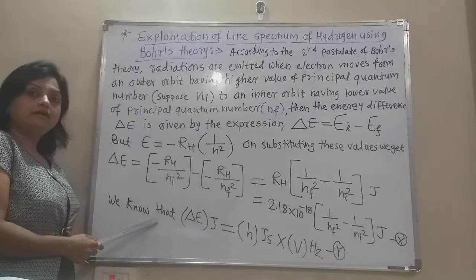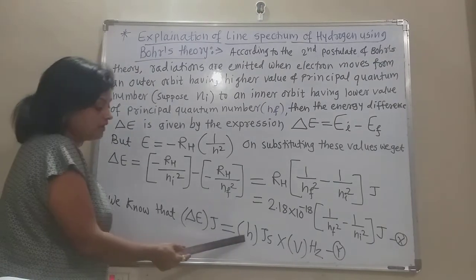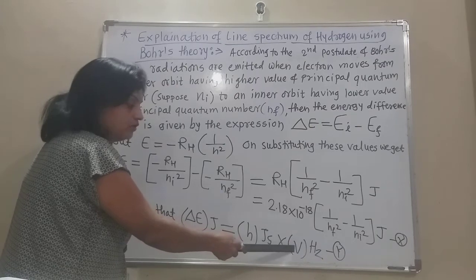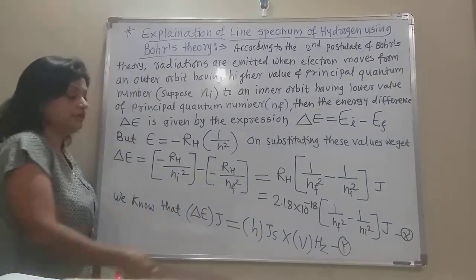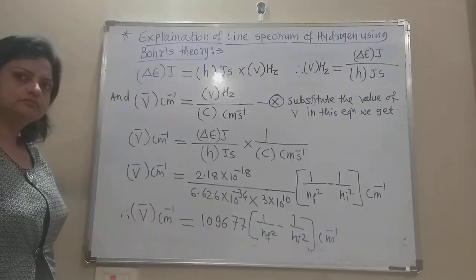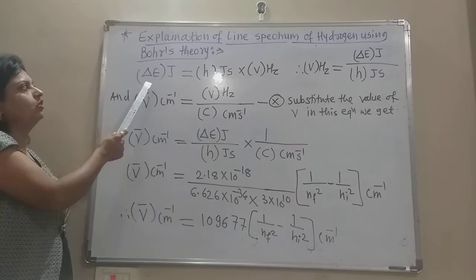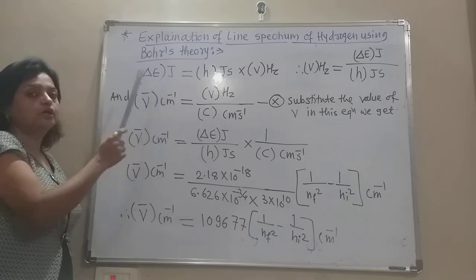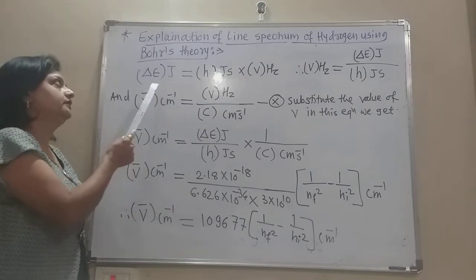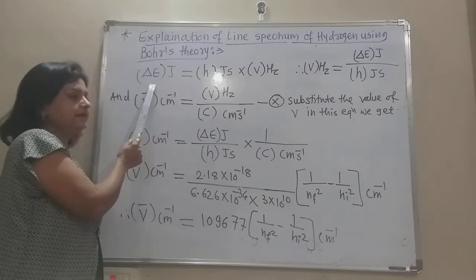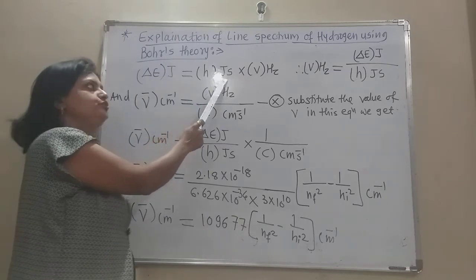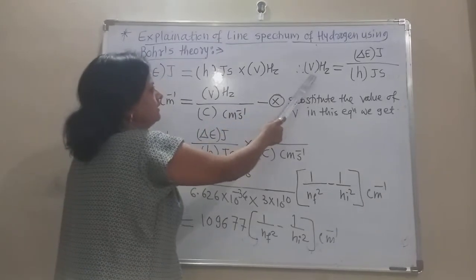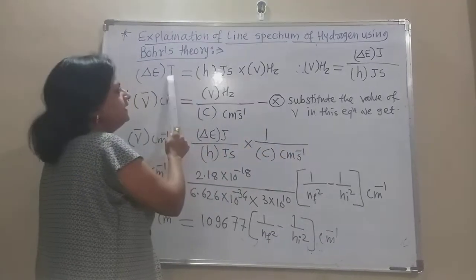We also know that delta E in joules is given by H, that is Planck's constant in joule-seconds, multiplied by nu, the frequency in hertz. If we want the frequency in hertz, then nu equals delta E divided by H.